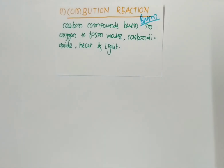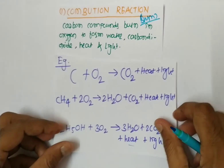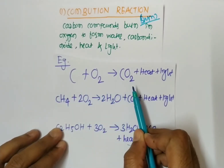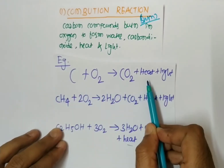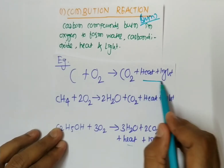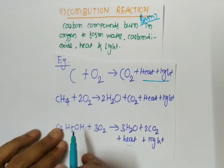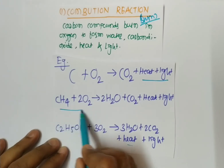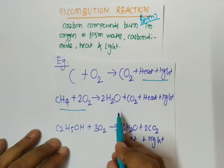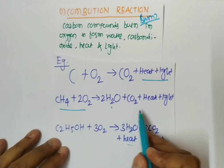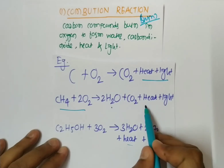For example, when carbon reacts with O2 it will form CO2, carbon dioxide, and we get heat and light. Another example: when methane reacts with O2 — that is, the burning of methane — the products formed are water, CO2, heat and light.